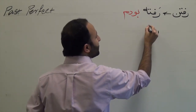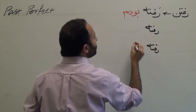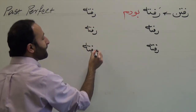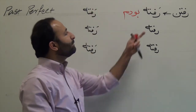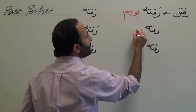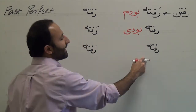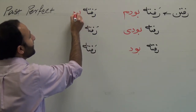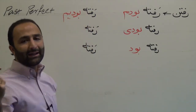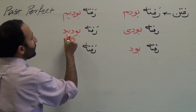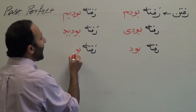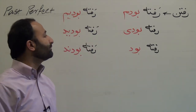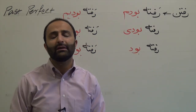Because raf-teh doesn't change at all — that's the first part. So: raf-teh-boodam, I had gone; raf-teh-boodi, you had gone; raf-teh-bood, he or she had gone; raf-teh-boodim, we had gone; raf-teh-boodid, you had gone (plural); and raf-teh-boodand, they had gone (third person plural). As you can see, it's regular and very easy to form.